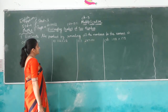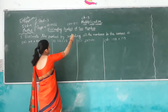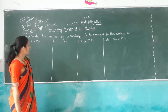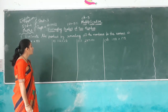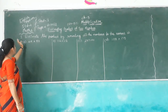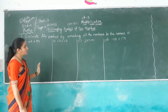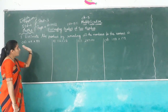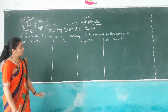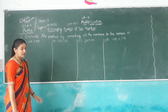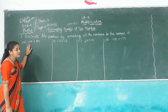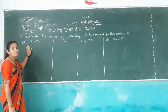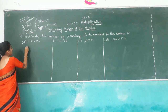Now next exercise, exercise number 5.7: Estimating product of numbers. First we find rounding to the nearest ten numbers, then we multiply both numbers.